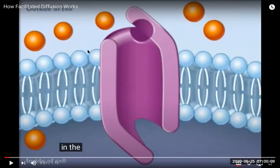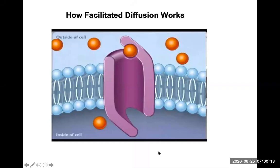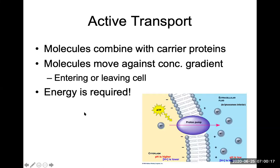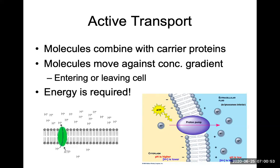So that's facilitated diffusion — another passive transport process. Active transport means that molecules combine with carrier proteins and energy is required. Energy is always in the form of ATP, adenosine triphosphate, and molecules will move against the concentration gradient in active transport, from low to high concentration. An example is a proton pump, which uses ATP energy to move hydrogen ions against their concentration gradient.